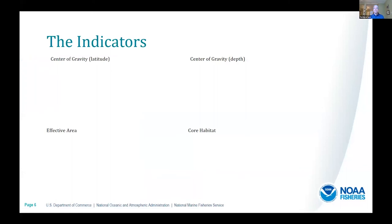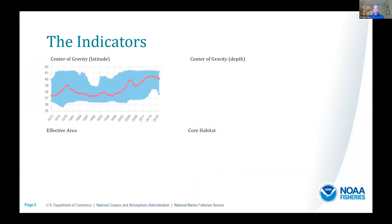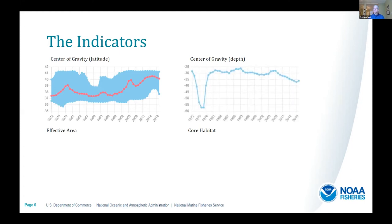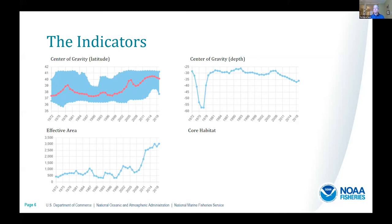The indicators we're looking at are: center of gravity latitude, which shows changes in the distribution in the north-to-south direction; center of gravity depth, which shows how the distributions are moving shallower or deeper; effective area, which you can imagine as packing the species into the smallest area possible given the average species density; and finally, core habitat, which shows the area of cells that have a density greater than the median density for the species.